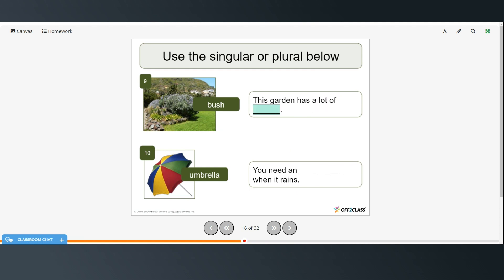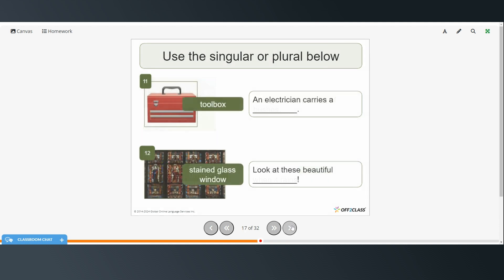This garden has a lot of, and again, a lot of would be more than one. So it would be bushes. Again, because of the SH, we add ES. And you need an, and remember, an means one, an umbrella, when it rains. An electrician carries a, and again, a means one, toolbox. And look at these, so these, remember, is more than one. And so we would say beautiful stained glass windows.